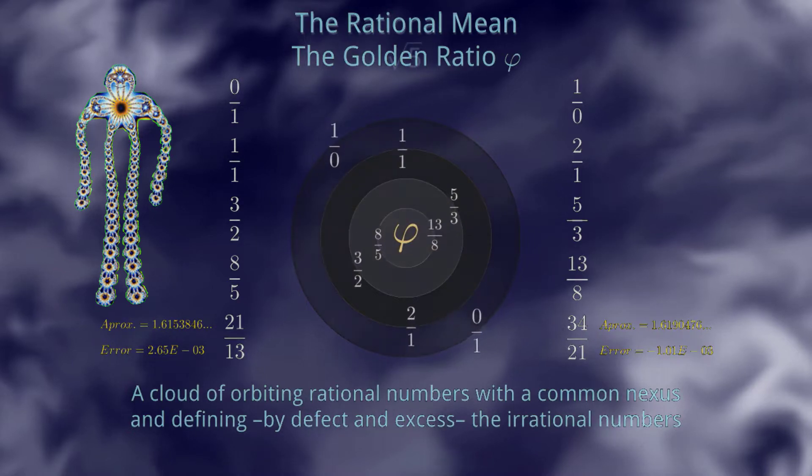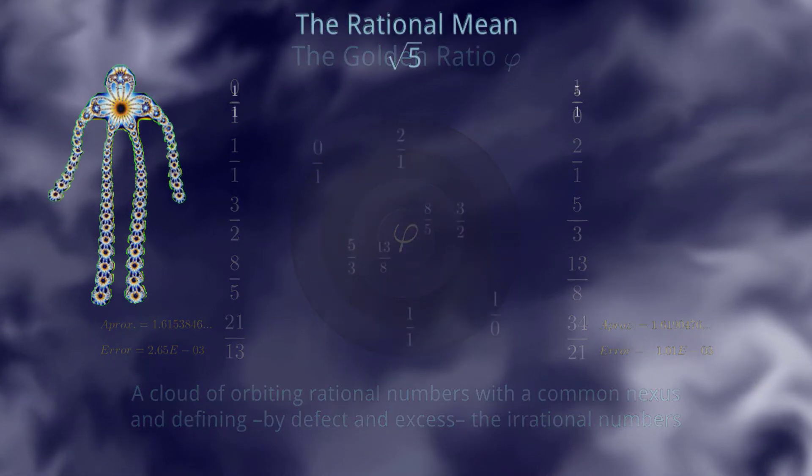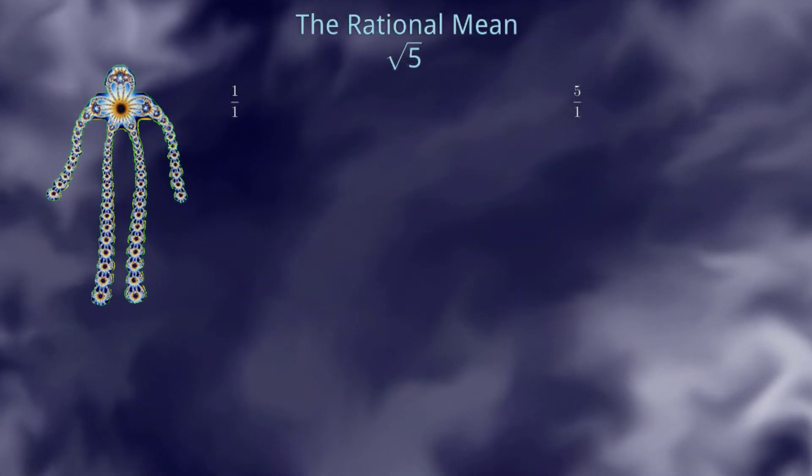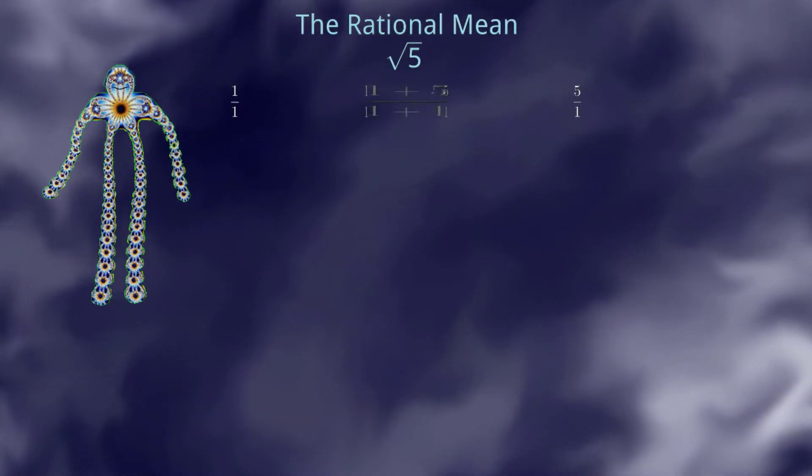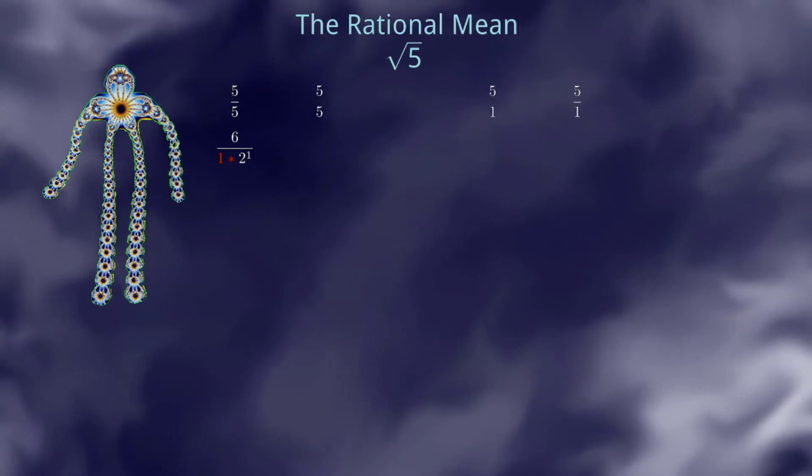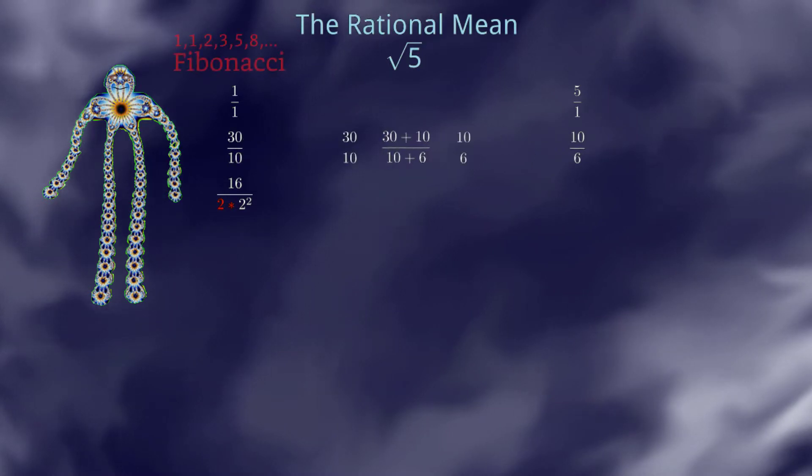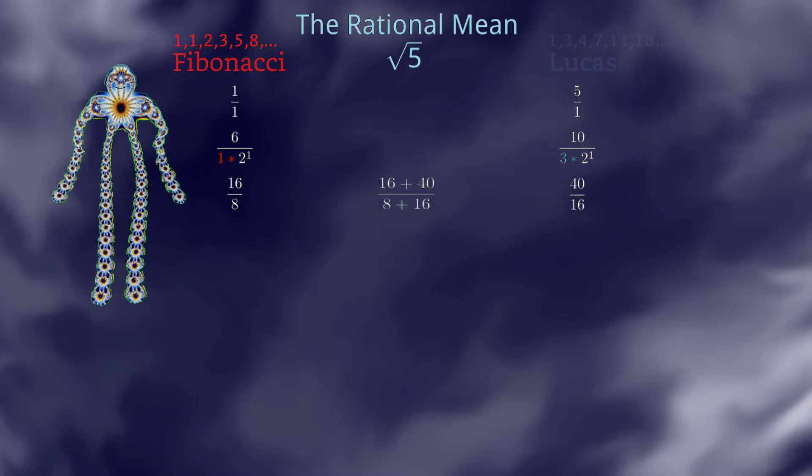And talking about the Fibonacci sequence, if in a similar way we compute the square root of the number 5, then we get this curious result. As you can see, by factorizing the denominator of each approximation in terms of powers of 2, not only the Fibonacci sequence gets unveiled, but also the Lucas sequence.